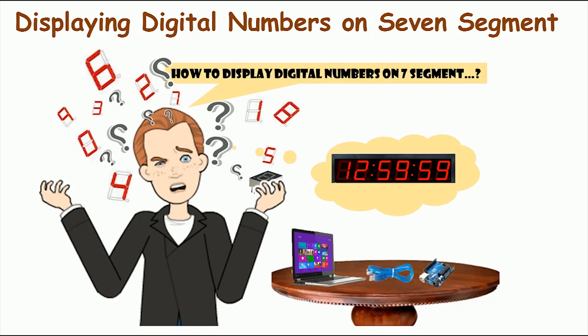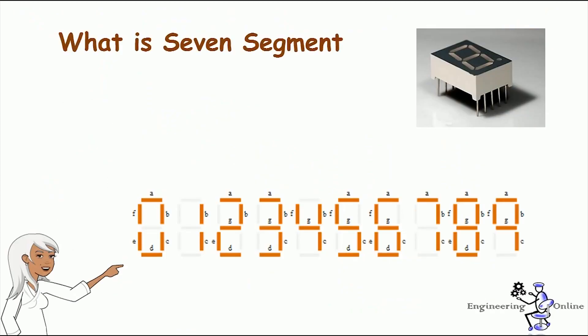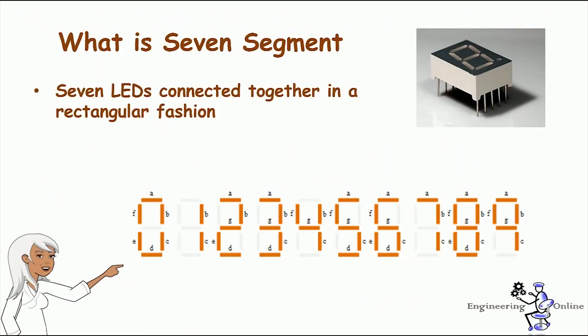First let's have a quick review of seven segments, then we will move towards the programming section. The seven segment display has seven LEDs arranged in the shape of the number eight. They are quite easy to use and cost effective too. A seven segment display got its name from the fact that it has seven illuminating segments, and each of these segments has an LED.